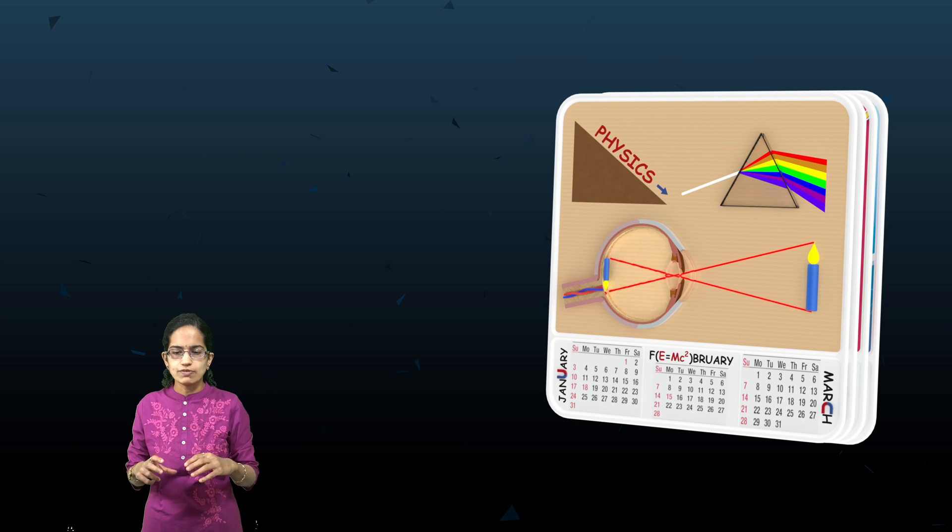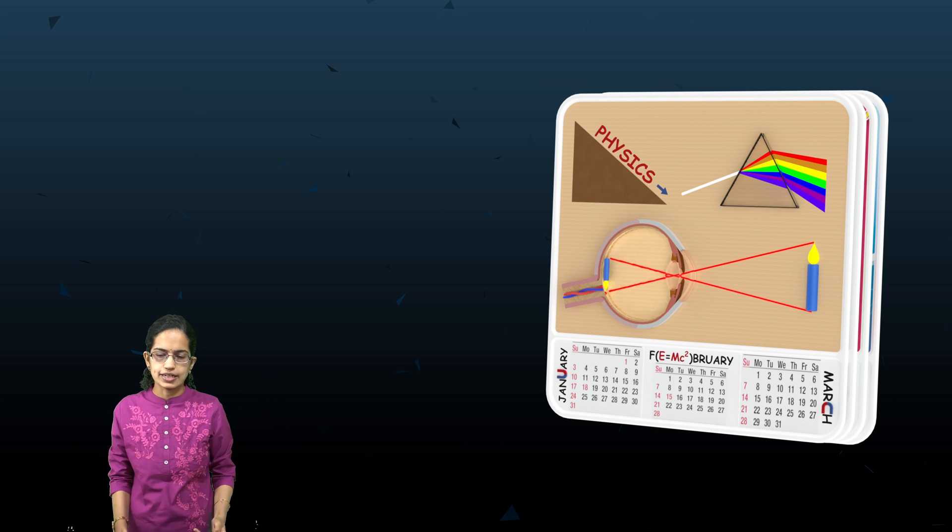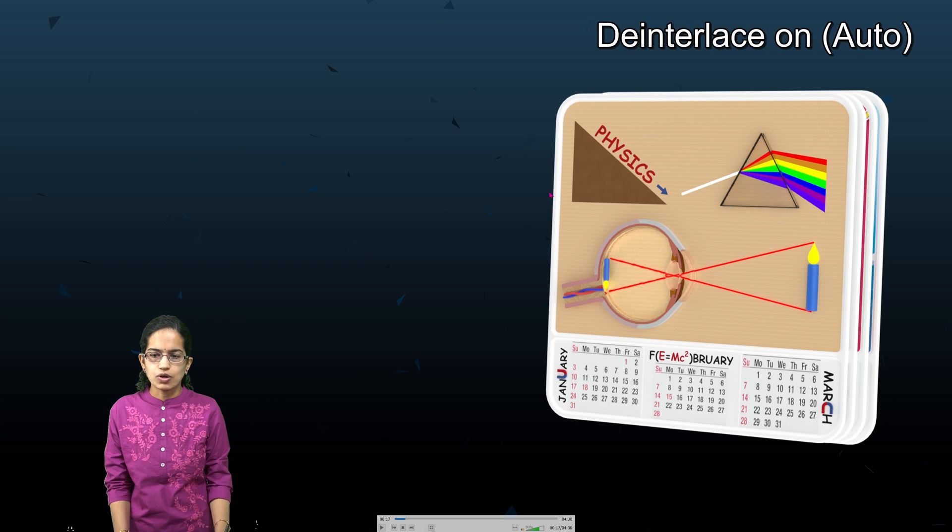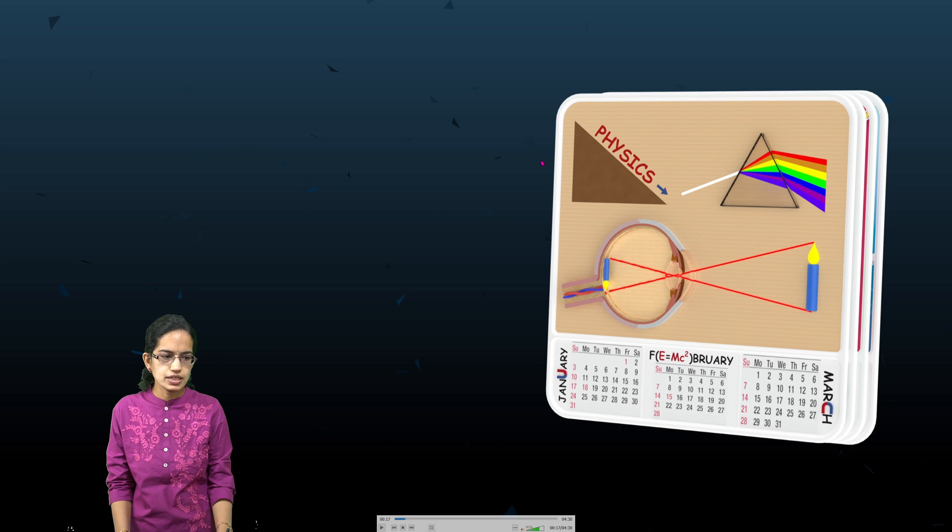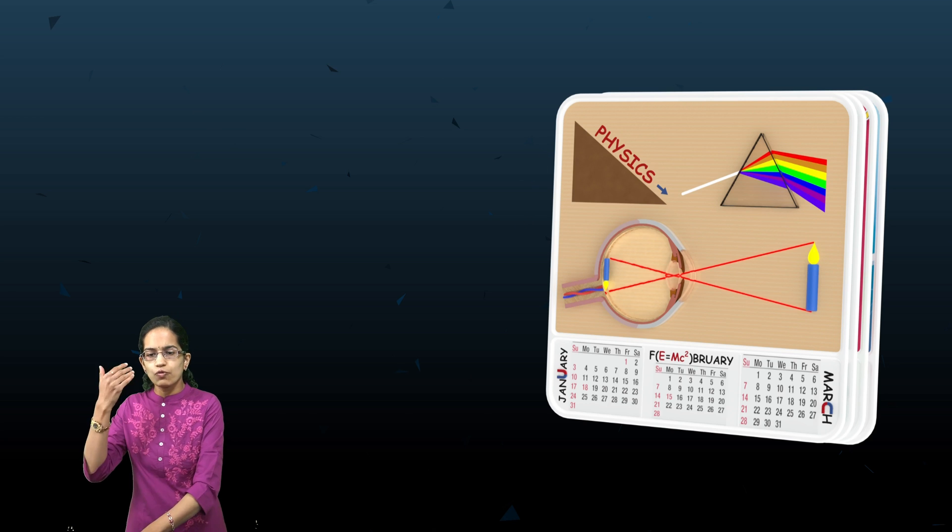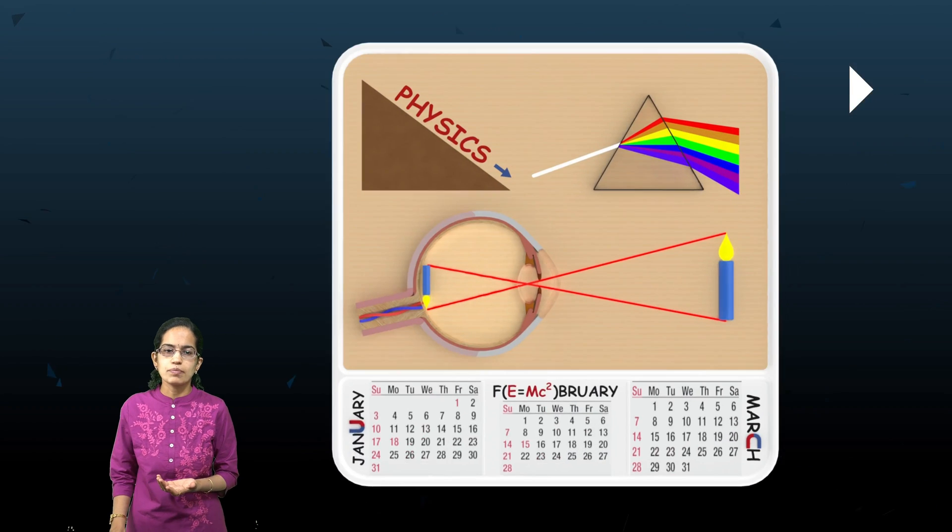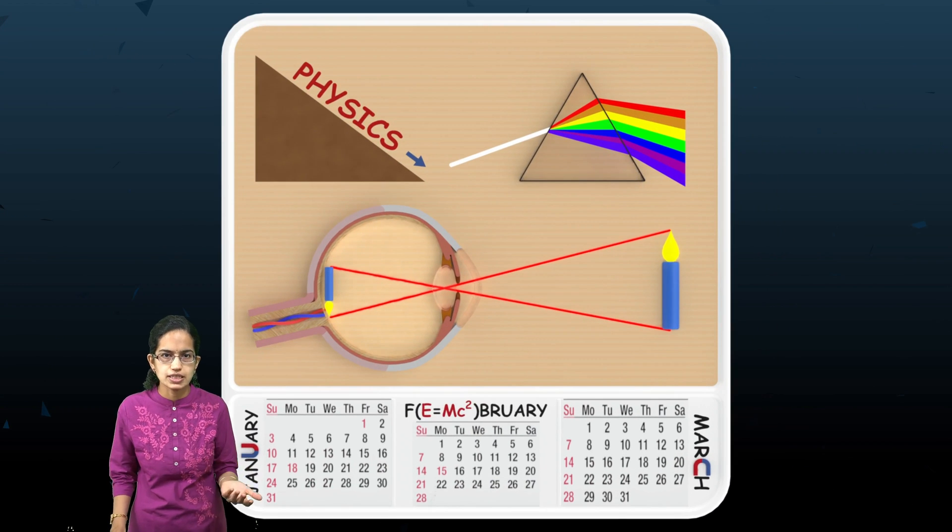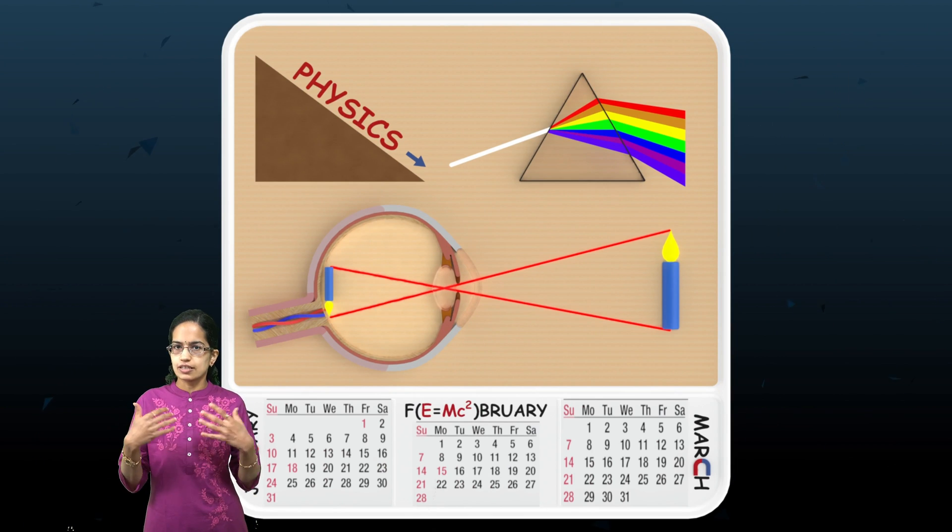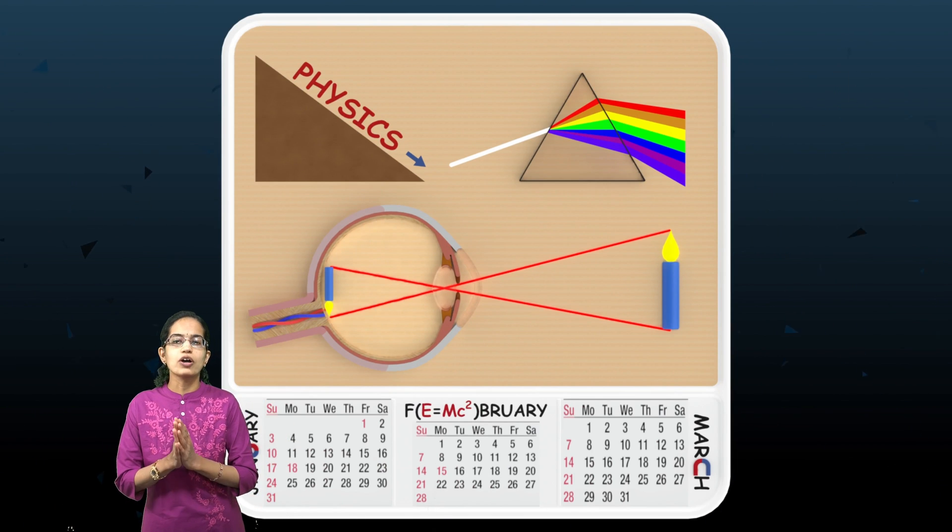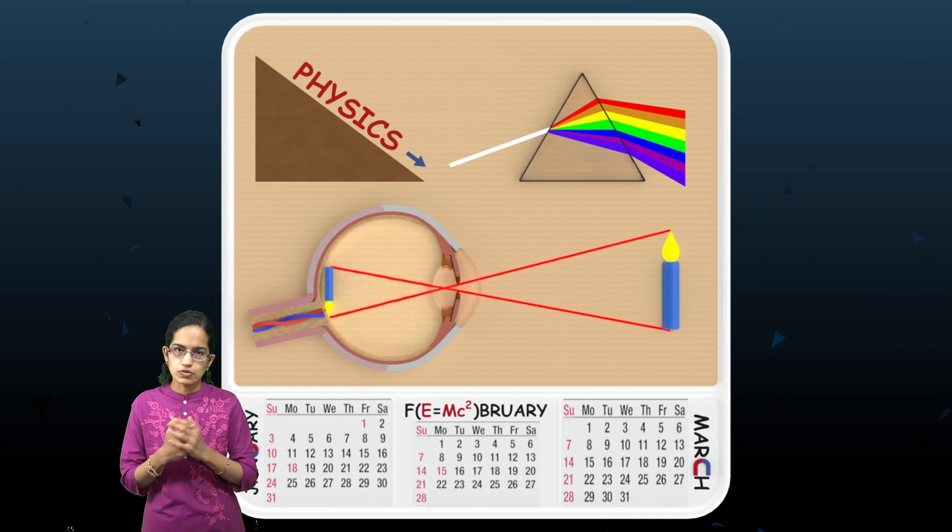Here we have an example from physics. We basically take a section and separate it into the lower section and the upper section. In the upper section, whatever concepts of physics are being asked—like concepts from optics or divergence—those kinds of concepts would be covered.